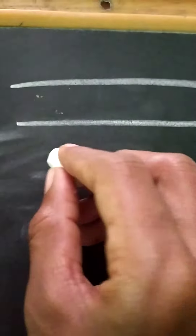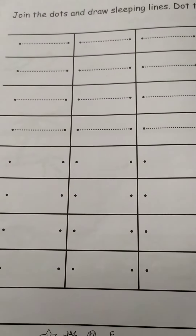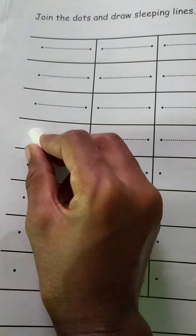This is a sleeping line. Now we have to draw sleeping line on your slate. See in this book — you have to write in your notebook. Right, sleeping line.